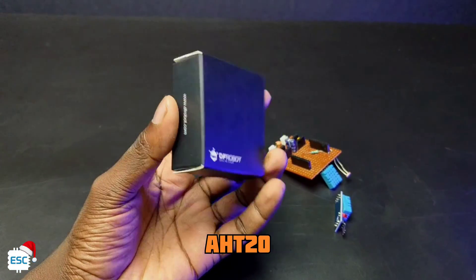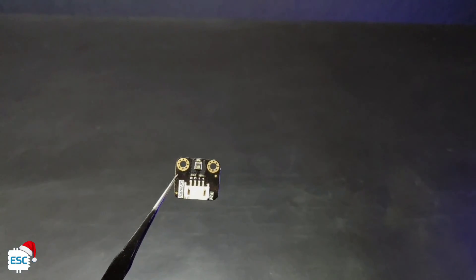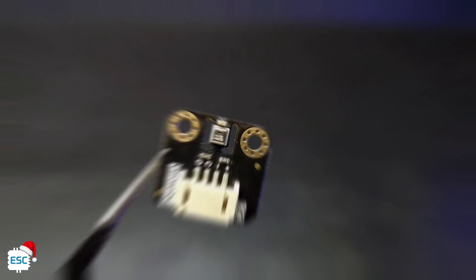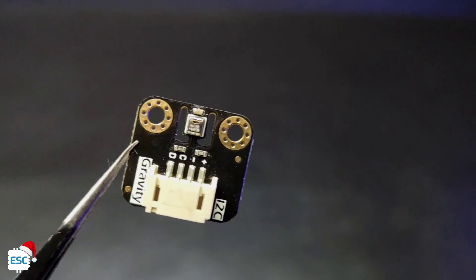So what we have here is the DFROBOT AHT20 temperature and humidity sensor, which is a high precision temperature and humidity sensor. It uses MEMS semiconductor capacitor element for detecting humidity.